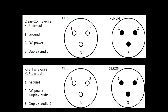The differences between the two systems are how duplex audio is carried. On ClearCom, duplex audio — or we'll call this channel A — is carried across pin number 3. In RTS, channel A is carried across pin 2, which is also the power line. Duplex audio 2, or channel B, by default on an RTS circuit is carried across pin number 3.